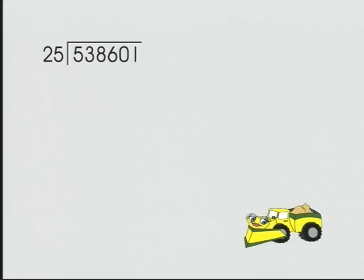To divide 538,601 by 25 using Superchunkit, the first thing we'll do is make a chart to help us find the multiples of 25.